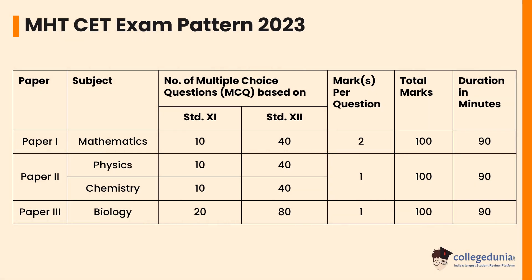For the PCM paper in mathematics, the number of MCQs asked from 11th standard are 10, while 40 questions are asked from class 12th. Two marks are allotted for each correct answer, making the total marks 100. These 50 questions are to be solved in 90 minutes.